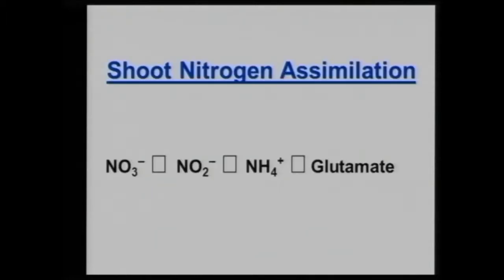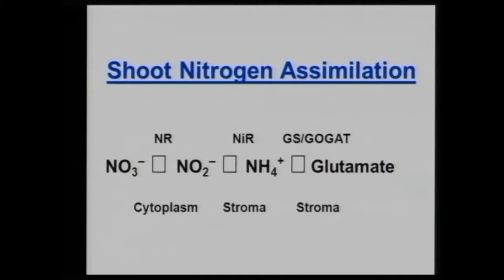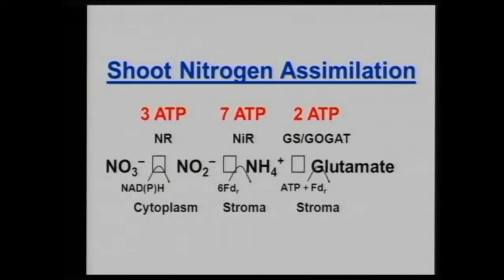Nitrogen assimilation within the plant: nitrate is reduced into nitrite, then to ammonium, then to glutamate — in the cytoplasm and stroma. These are the enzymes involved. This is the most energetically important process within plants, because it consumes a lot of ATP.